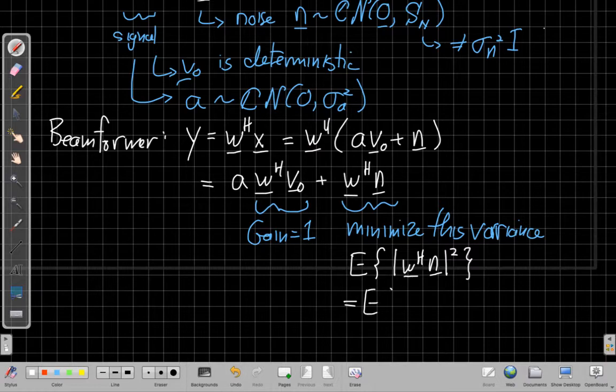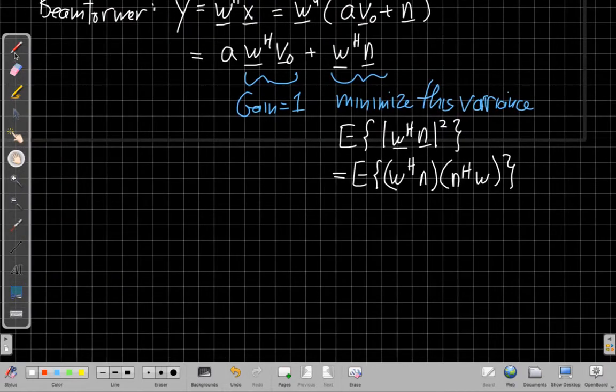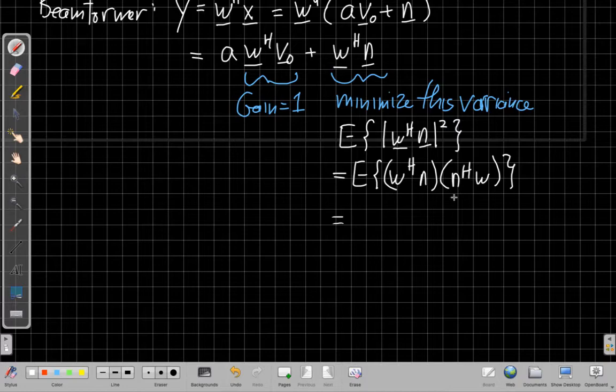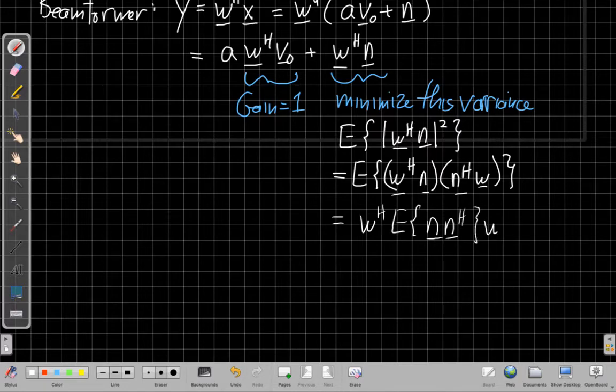So if we do that, I could write this out and say, this is the expected value of W Hermitian N times its conjugate, which becomes N Hermitian W. These two terms are the conjugates of each other, multiplying them gives me the magnitude squared. So if I do that, I can then say, well, the weights are what we're going to compute here. And so the only thing that's random is the N inside. So I could say that this is W Hermitian times the expected value of N, N Hermitian times W.